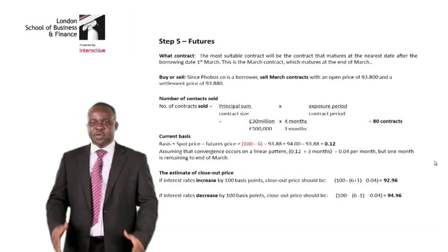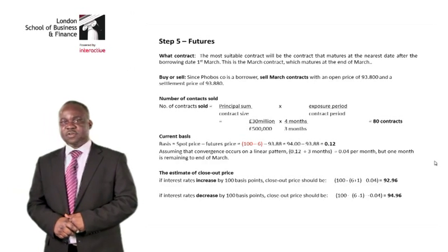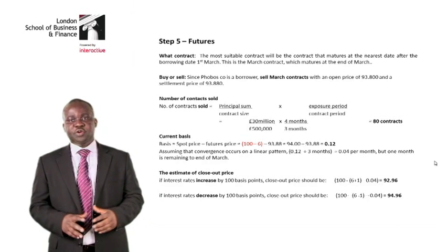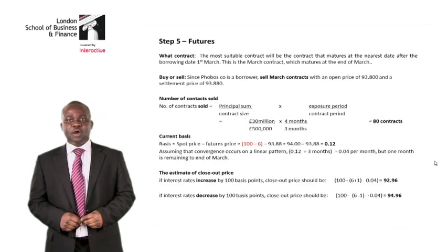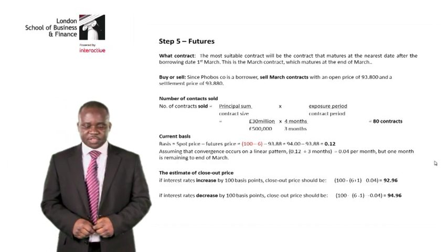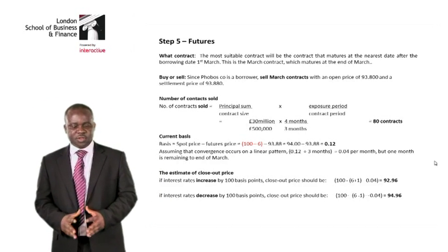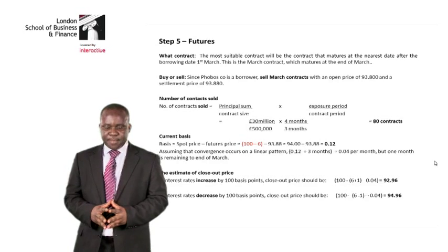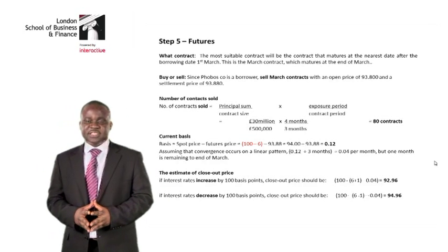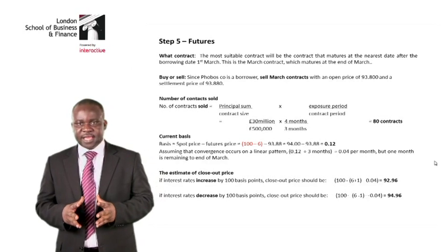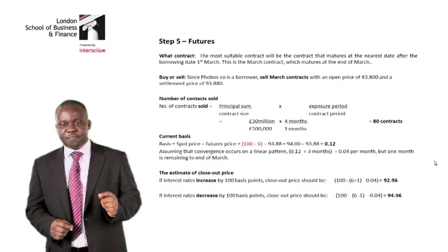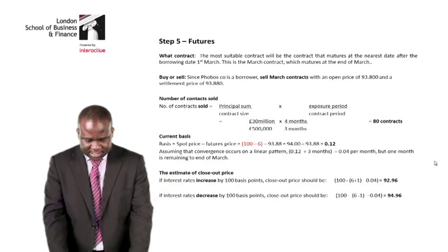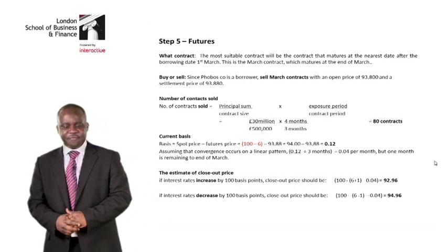In this case, we are going to borrow on 1st of March. So if we are borrowing on 1st of March, we need a contract that will mature immediately after 1st of March. Looking at the question, there is a March contract, which is expected to mature at the end of March. Therefore, we would enter into the March contract as our transaction date is 1st of March.